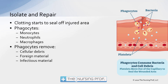Then we have the isolation and repair stage. As seen in the picture on the right, phagocytes consume the bacteria and cellular debris. Clotting starts to seal off that area — platelets are activated, they move into the area and clot off those vessels so that we don't bleed to death from a little puncture wound. The phagocytes — monocytes, neutrophils, macrophages — are all coming to that area to eat up all of that foreign material.